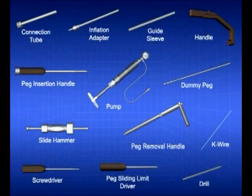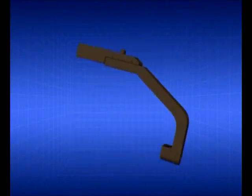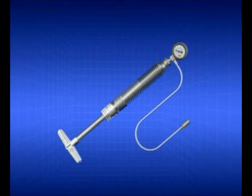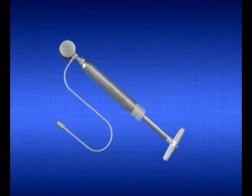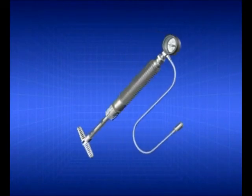The system accessories include an instrument set for insertion and removal of the implantable components and an inflation device. The nail insertion handle through which the peg is introduced is radiolucent. The pump is designed to deliver saline to the nail and to the peg in order to expand them. The pressure gauge on the pump allows controlled inflation.